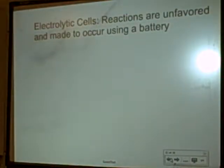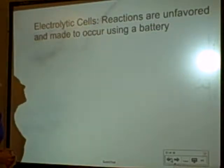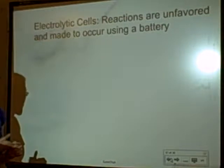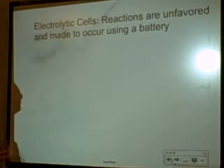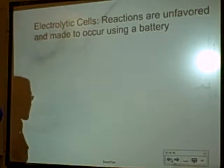Okay, so let's look at electrolytic cells. I told you there were two types of electrochemical cells. They're galvanic or voltaic, and those are cells that are favored. There's also electrolytic cells. Electrolytic cells are unfavored reactions.